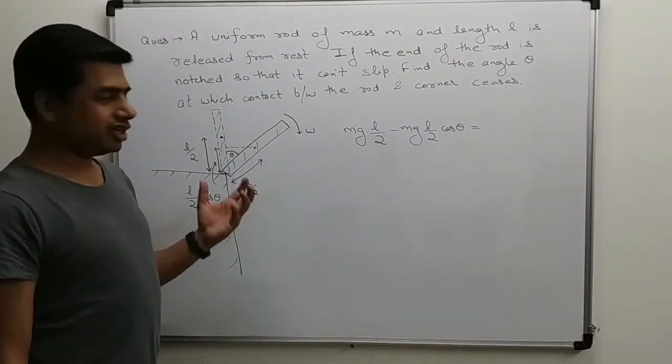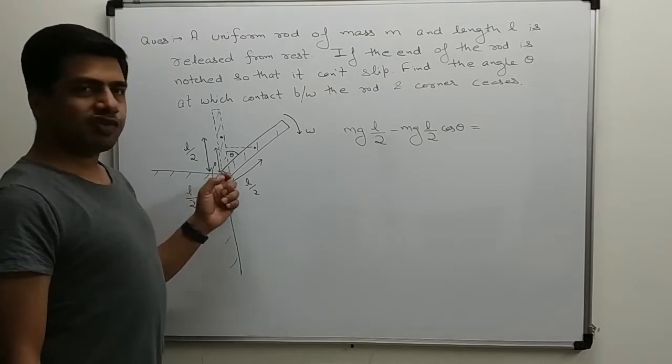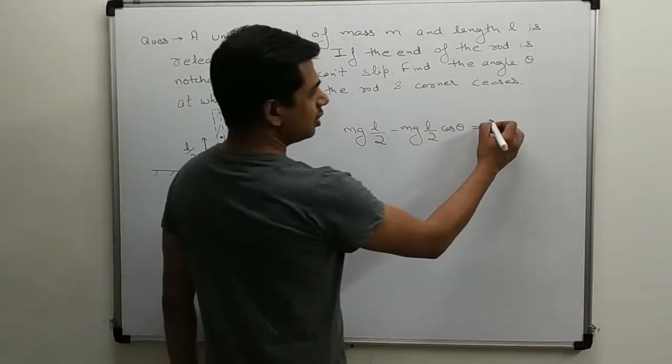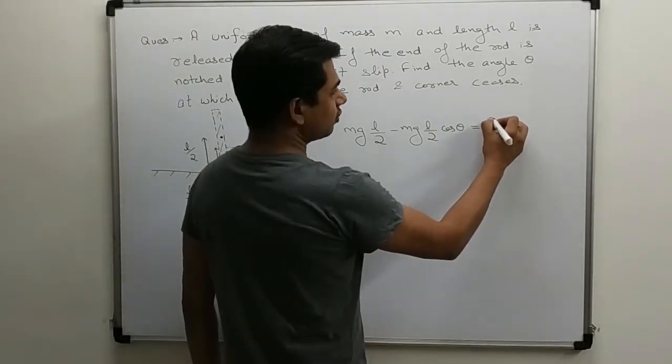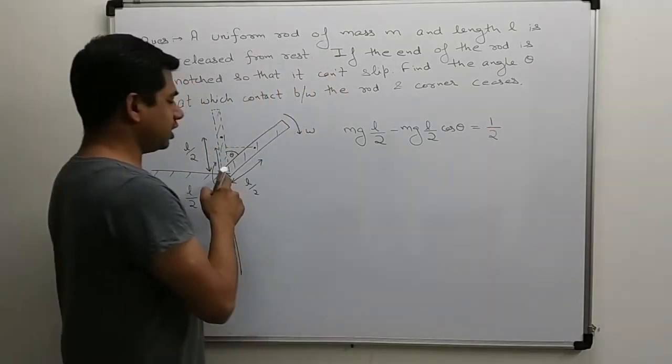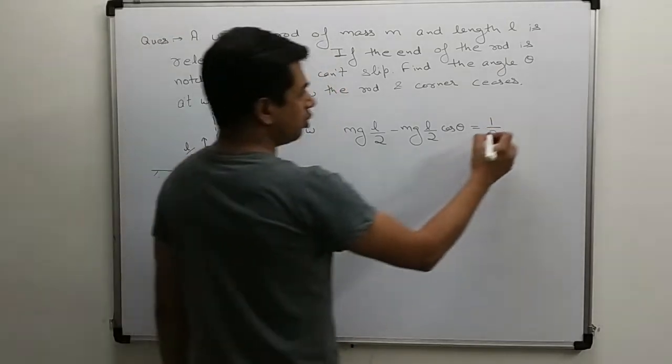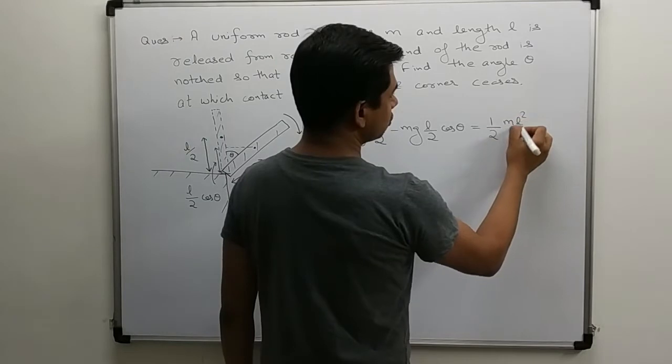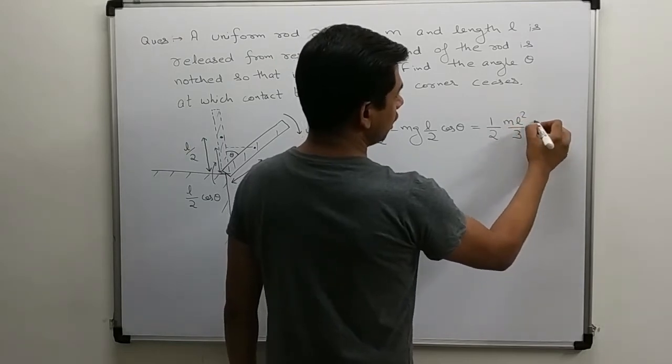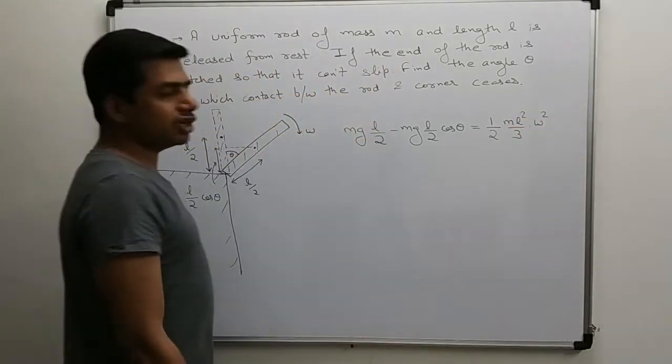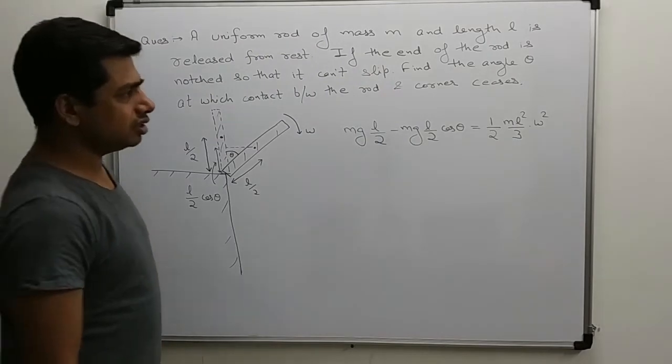This is equal to gain in kinetic energy. Since this end is acting as fixed axis, kinetic energy will be half I about this end. Rod's I about end point is Ml square by 3 into omega square. Half I omega square. This will be kinetic energy.